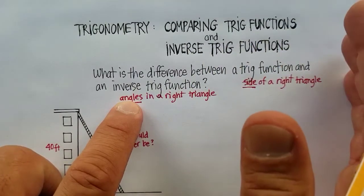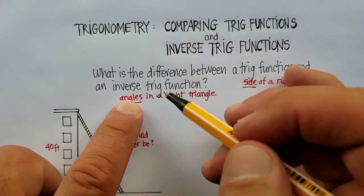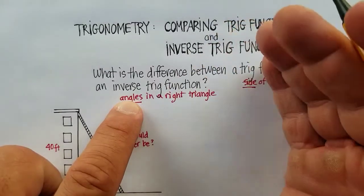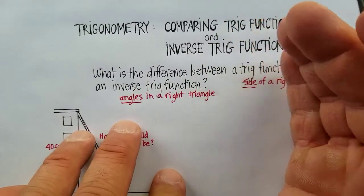What is a trig function to begin with? Basically, it's just a ratio of the sides of a right triangle, always producing some kind of a ratio or a decimal. That's consistent.